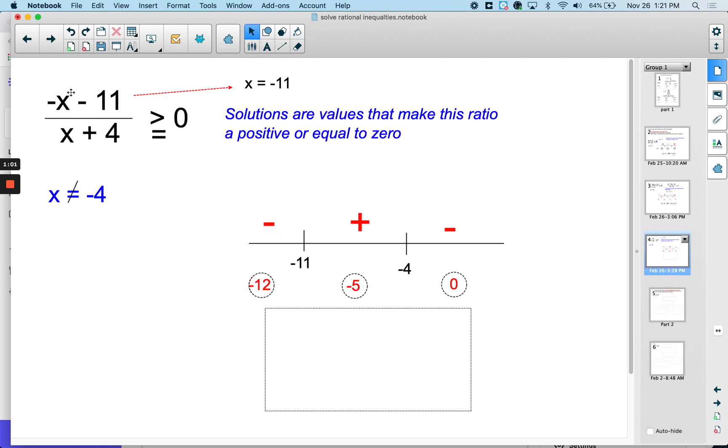If I plug negative 5 in, I get 5 minus 11 is a negative. Negative 5 plus 4 is a negative. Two negatives divide to a positive. And then if I plug zero in, I end up with negative 11 over a positive 4, which is a negative.